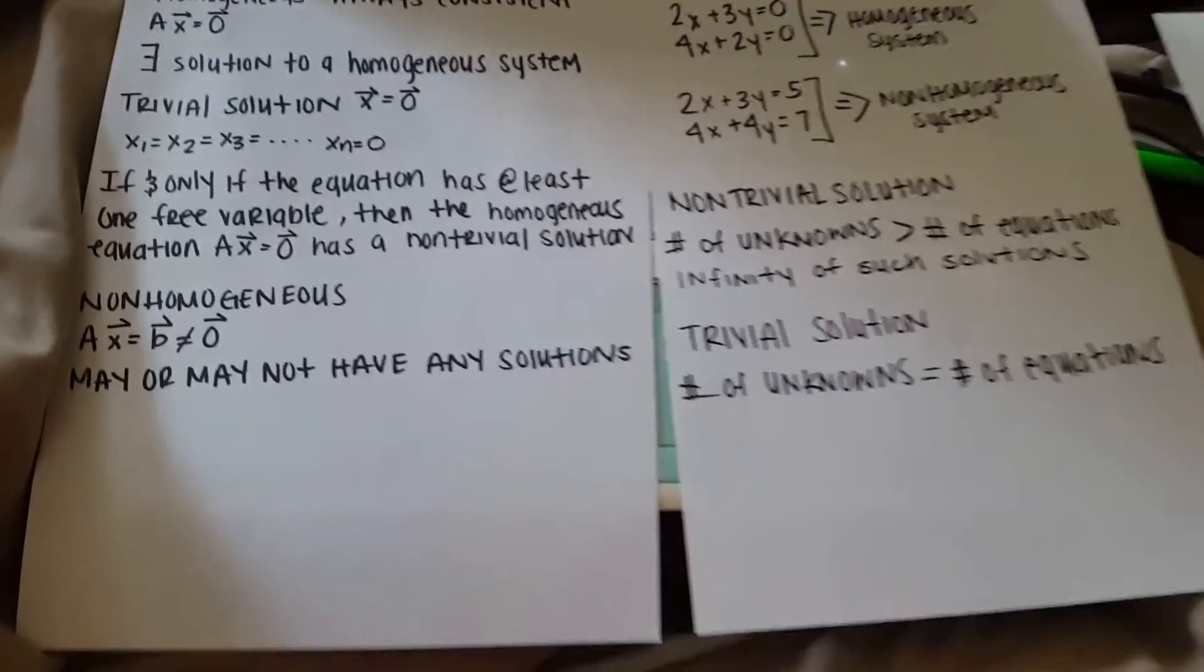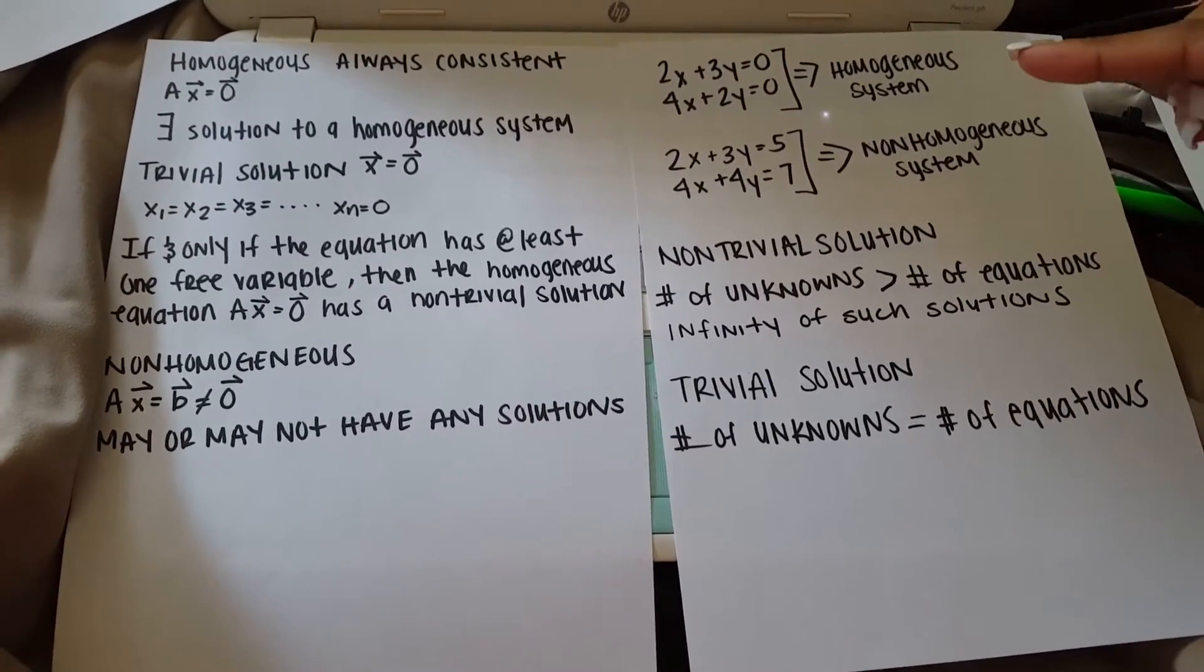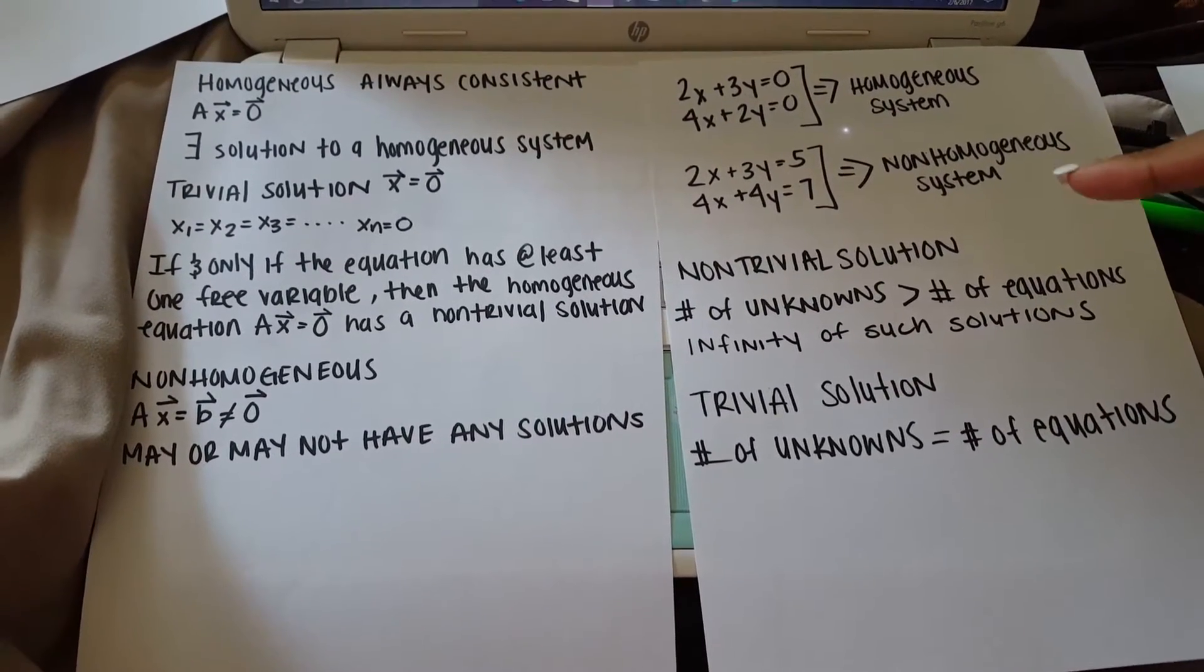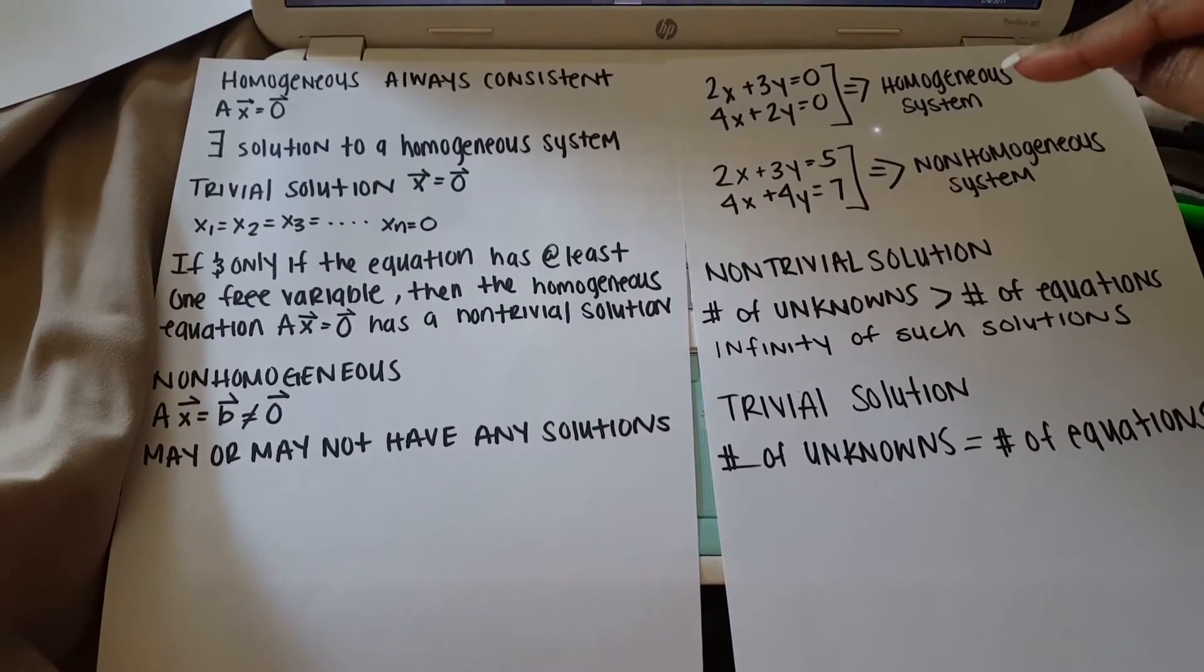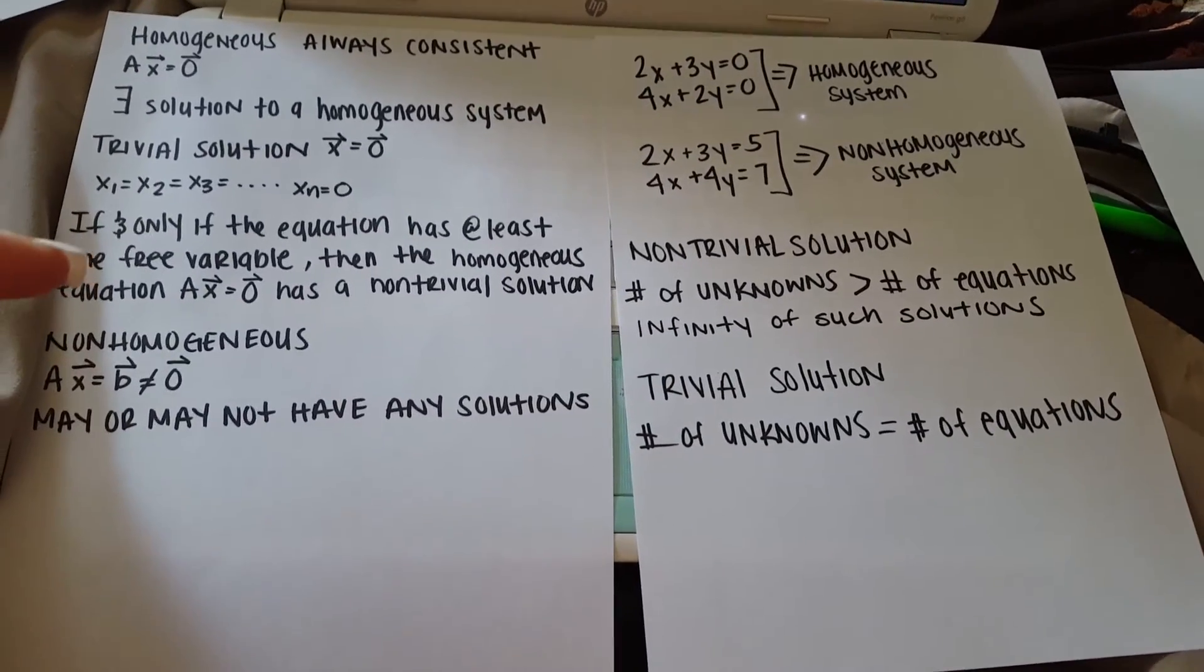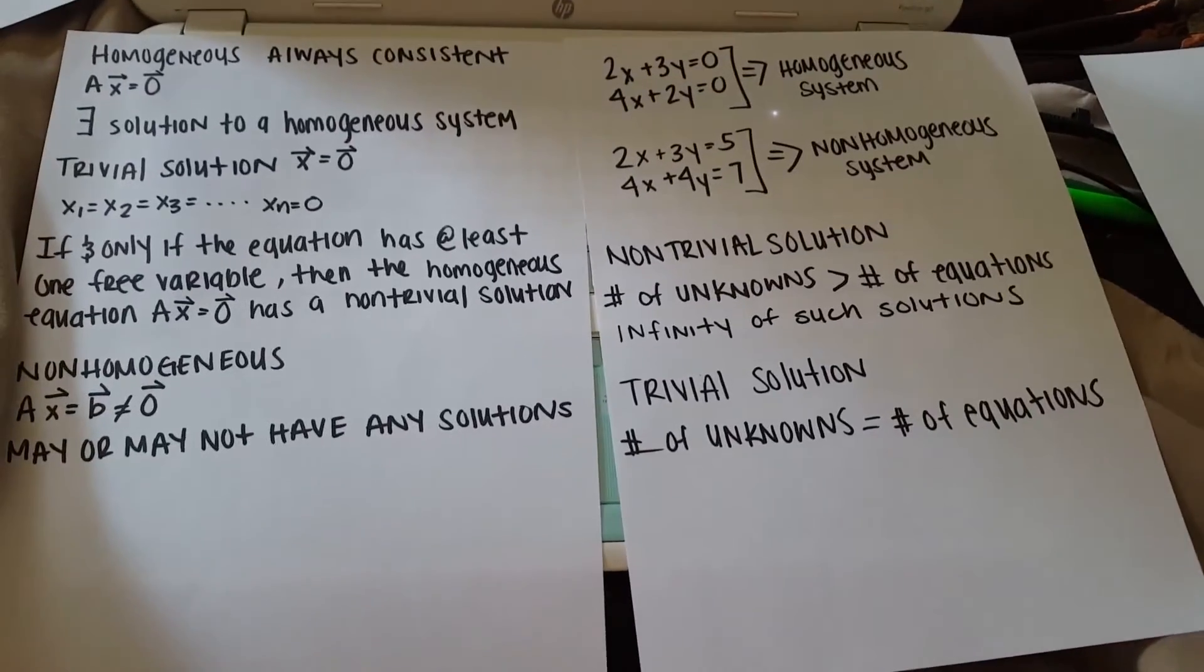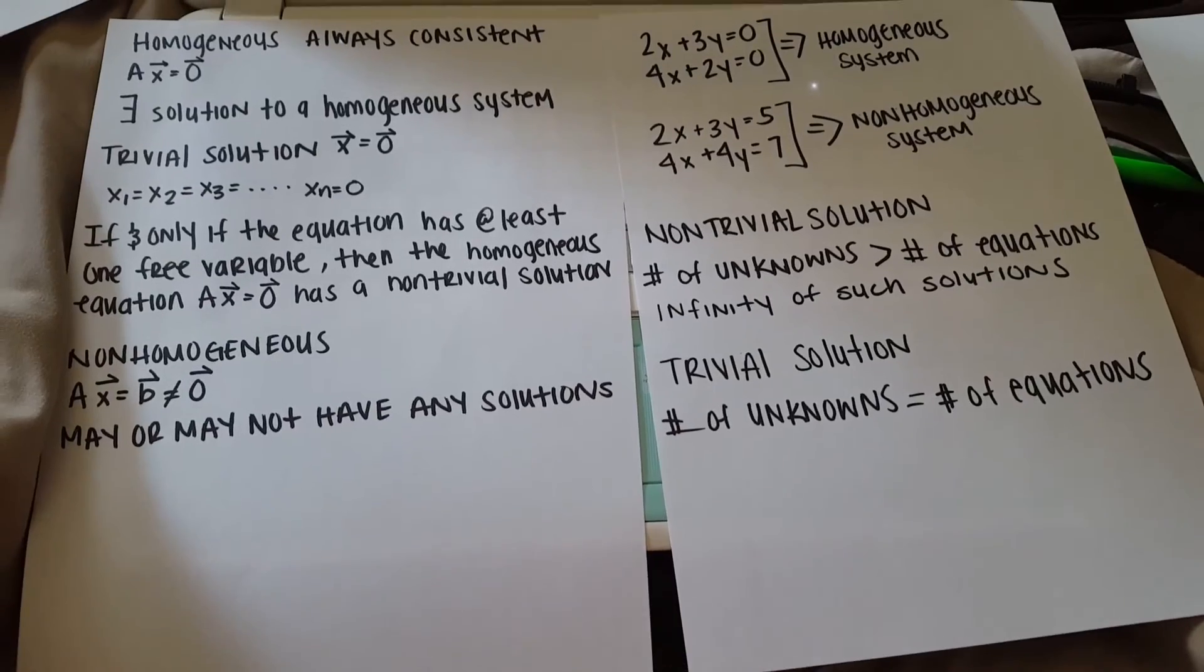So there you go. You should be able to identify a homogeneous system of equations versus a non-homogeneous system of equations. And once you know that it's a homogeneous system, then you can decide whether the solution is trivial or non-trivial. I hope that helped you out, and thanks for watching.